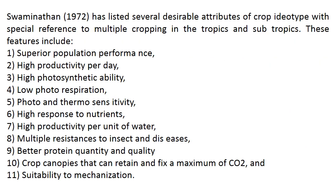Swaminathan in 1972 listed several desirable attributes of crop idiotype with special reference to multiple cropping in the tropics and subtropics. These include: superior population performance, high productivity per day, high photosynthetic ability, low photorespiration, photo- and thermo-sensitivity, high response to nutrients, high productivity per unit of water, multiple resistance to insects and diseases, better protein quantity and quality, crop canopies that retain maximum carbon dioxide, and suitability to mechanization.